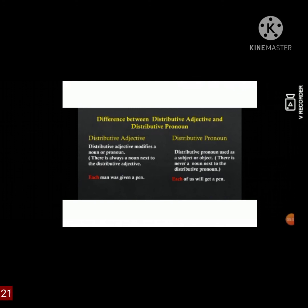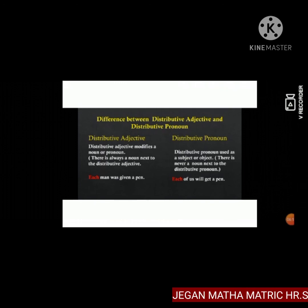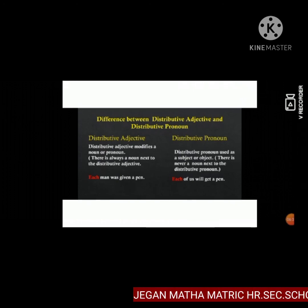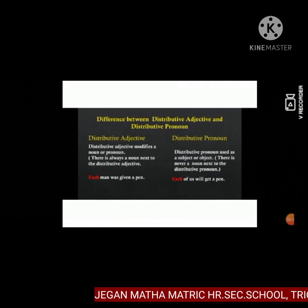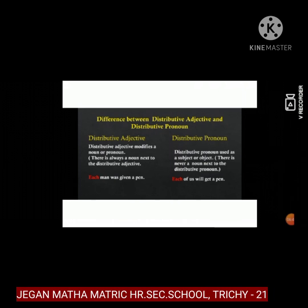Distributive adjective modifies a noun or pronoun, and there is always a noun next to the distributive adjective. Example: 'Each man was given a pen.' Next, distributive pronoun. A distributive pronoun is used as a subject or object, and there is never a noun next to it. Example: 'Each of us will get a pen.'